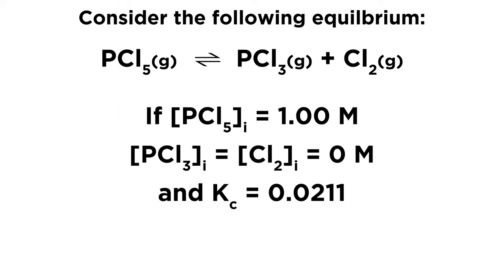So let's look at this equilibrium. We have PCl5 in equilibrium with PCl3 and Cl2. Now, if we are given that the initial concentration of PCl5 is 1.00 molar, and the initial concentrations of PCl3 and Cl2 are zero, so we have none of that.